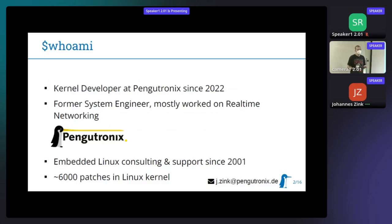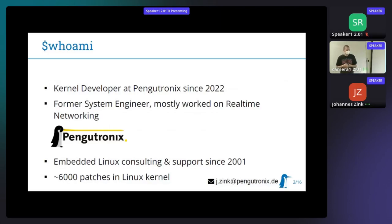What do I mean by proprietary networks? They were using partly open standards, partly closed source stuff, and were partially working on proprietary network stacks. Most of them weren't actually using Linux. I experienced quite some pain with that and quite some violations of real-time properties. So we will have a look into what those real-time properties are and why we want to have them.